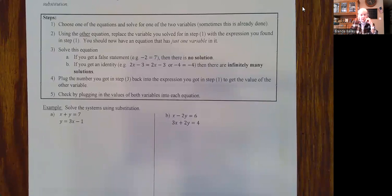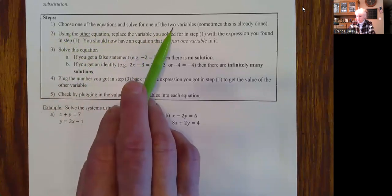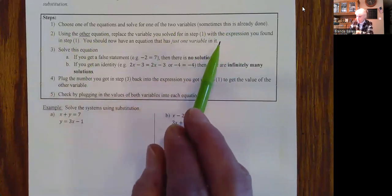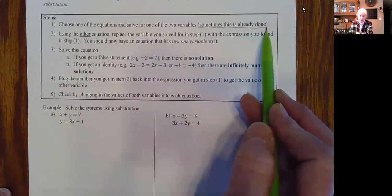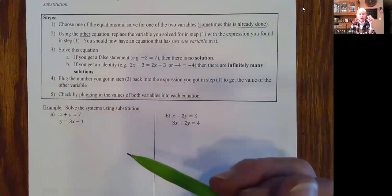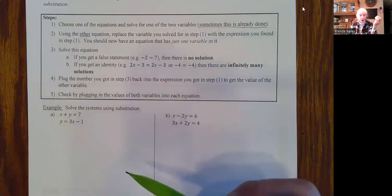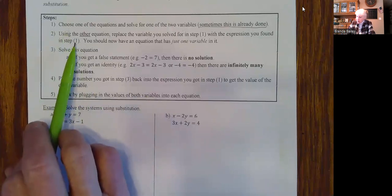We'll do one example where you use substitution on a story problem. Let's go through our steps. Step one: choose one of the equations and solve for one of the two variables. Sometimes this is already done. I use substitution if this is already done; otherwise I use the elimination method. But you can decide — you just need to make sure you find the common point or points, if any.